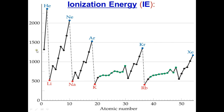As we go from left to right in a period, ionization energy increases. For example, lithium, sodium, potassium, and rubidium are on the left side, and noble gases are on the right. So moving left to right, ionization energy increases. This all has to do with protons and shielding.